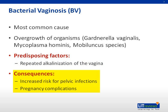BV increases the risk of post-abortion endometritis and pelvic inflammatory disease. In pregnancy, it is associated with late miscarriage, preterm delivery in high-risk pregnancies, preterm premature rupture of membranes, and postpartum endometritis.